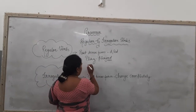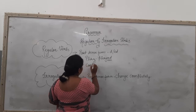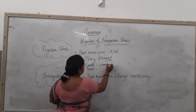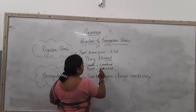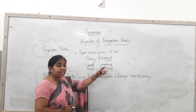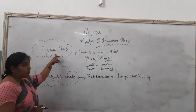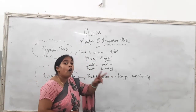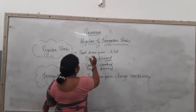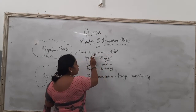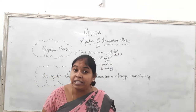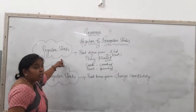More examples: cook becomes cooked, and paint becomes painted. Here we are adding ED to make the second form of the verb. So these types of verbs are known as regular verbs, where we add D or ED to make the past tense of the verb. This is the base form and this is the past form of the verb.